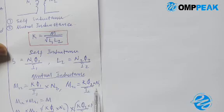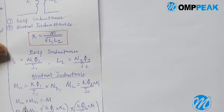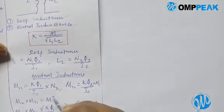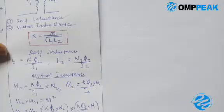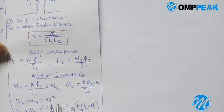So M12 times M21 will give us M squared. Now let's multiply these to obtain: k·φ1·N2 over i1 times k·φ2·N1 over i2, and M12 times M21 gives us M squared.